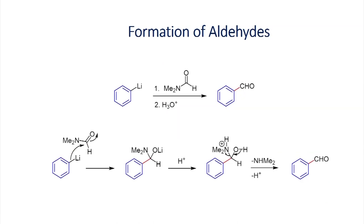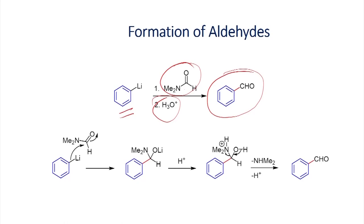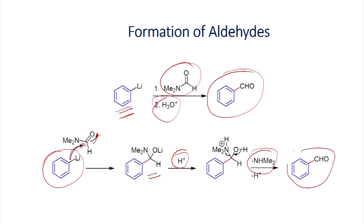This example involves the reaction of phenyllithium with dimethylformamide (DMF), which undergoes addition reaction; after acid workup it can be converted into benzaldehyde. This is a very important reaction if you want to introduce an aldehyde functional group into an aromatic system. One efficient route is to make the corresponding lithium reagent — here phenyllithium — which undergoes addition with the carbonyl group of DMF to generate an intermediate. After workup, loss of the amine gives the aldehyde as the product.